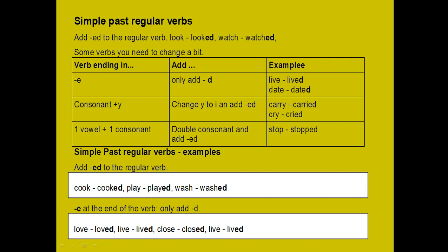Rule 2 — consonant plus -y: change -y to -i and add -ed. Eğer son iki harfi bir sessiz harf ve -y harfiyle bitiyorsa, we learned this rule before in present simple tense — we remove -y, then add -ied. For example: carry → carried, cry → cried. Y'den önceki harf sessiz mi? Sessiz. Y'yi düşürüp -ied ekini ekliyoruz.